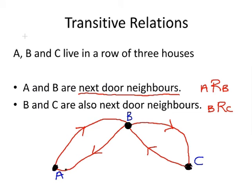But it is not the case that A is the next door neighbor of C. We do not have the link going between A and C directly. So as we have it here, this is actually not transitive.